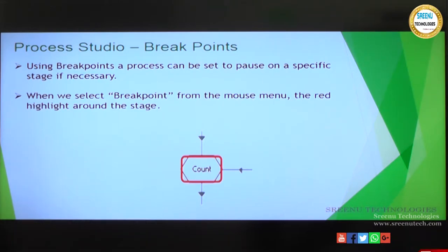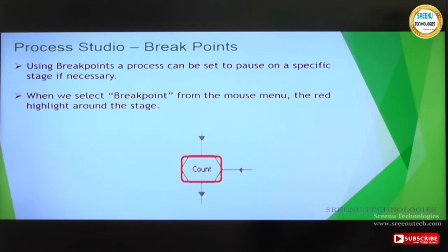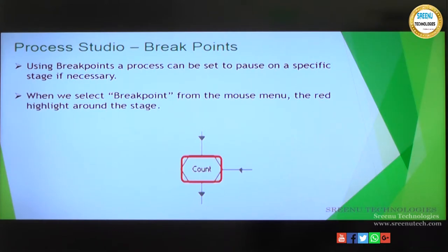The controlling play is used for debugging - we have seen how to speed up and slow the process execution and how we can debug things. One more such feature is breakpoints. Breakpoints are used at a specific stage if you want to stop the process and see what parameter values or data item variable values are present at that moment. Let's jump into the tool and see how we can keep a breakpoint on our previous circular path.